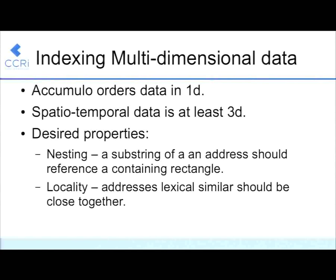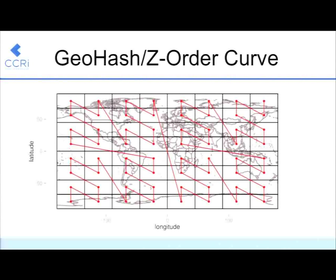Accumulo indexes one-dimensional data, but we don't have one-dimensional data. We need an approach where we take multidimensional data and reduce it to one dimension. In two dimensions, something like a geohash or a z-order curve fits the bill — you start in the lower left and visit all the grid cells, and you know what it means for one grid cell to come before or after another. That's why we've got the SF curve project, where a number of us are trying to get the details right and produce a solid, shareable solution.